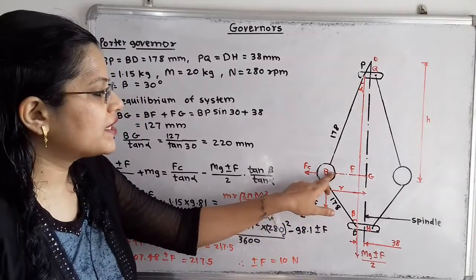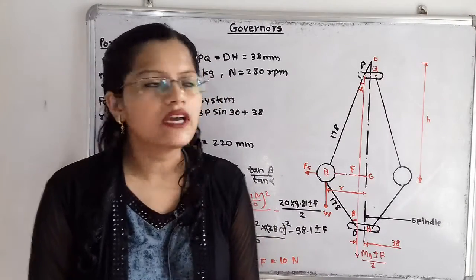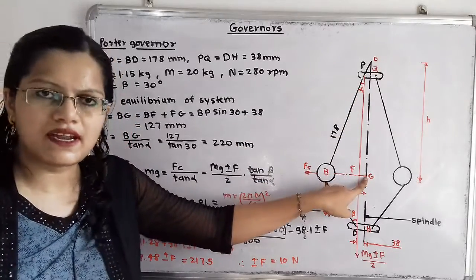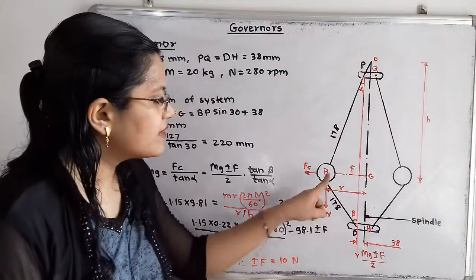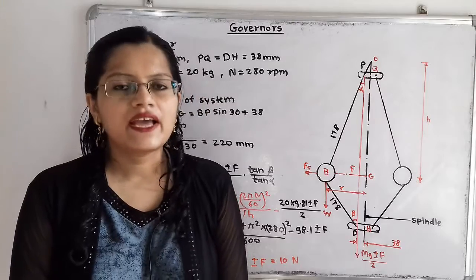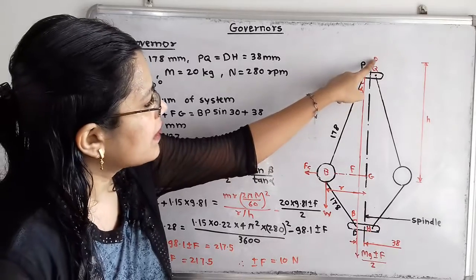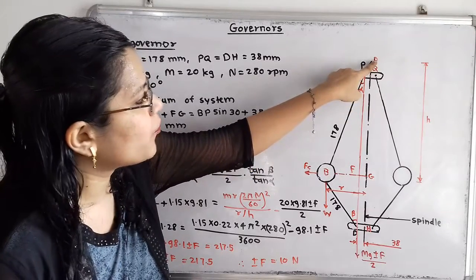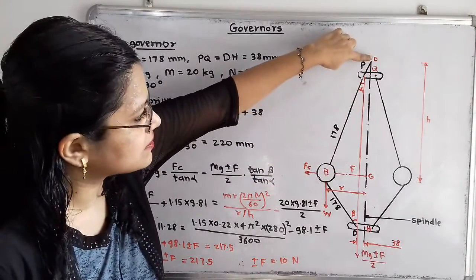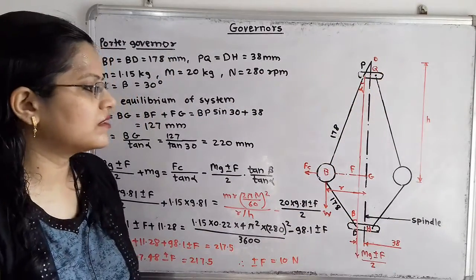Now if we draw a horizontal line passing through the center of the fly ball, the point of intersection of this line with the vertical spindle axis is known as point G. The horizontal distance BG is denoted as R. We extend arm BP and its intersection with the vertical spindle axis gives point O. The vertical distance from O to G is the height H, which we show in the diagram.